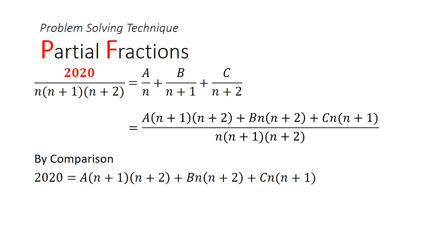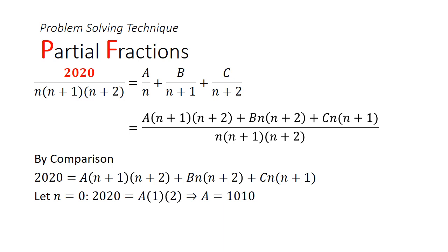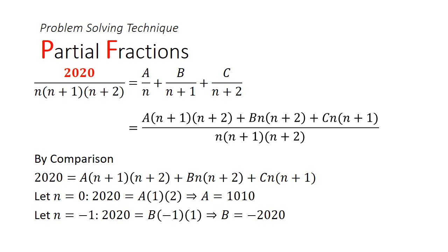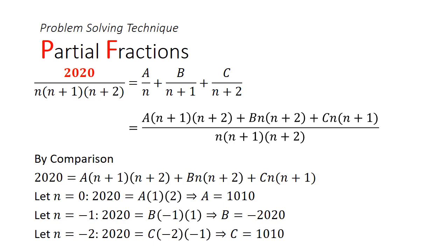Instead of expanding and comparing coefficients, a shortcut is to substitute convenient values of n. Substituting n=0 gives 2a = 2020, so a = 1010. Substituting n=−1 gives b = −2020. Substituting n=−2 gives c = 1010.